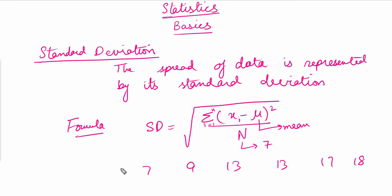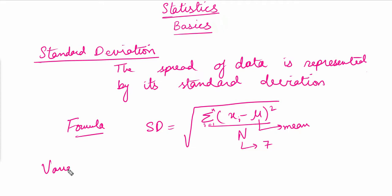Now the concept of variance: variance is nothing but the square of the standard deviation. The formula is the same — we simply take the square of the standard deviation and we get the variance.